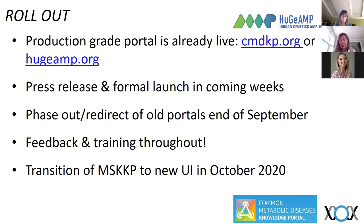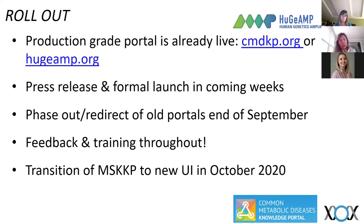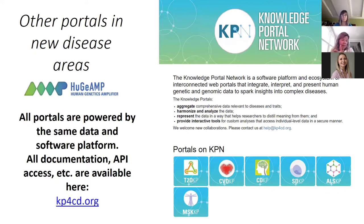The production grade portal is available to you today, but all other portals are still available. We want to phase out the old ones — we're going to do a press release and launch in the coming weeks in collaboration with our funding partners and our communities, then eventually phase out the old portals sometime end of September or early October. Throughout all this time, we'll be doing training and feedback. We'll also be transitioning our other publicly available portals, including the MSSKP, in October, so that everything will look the same if you go to any of the Human Genetics knowledge portal public portals.